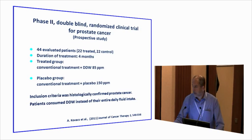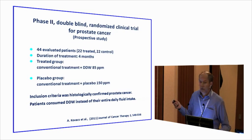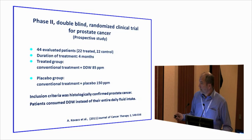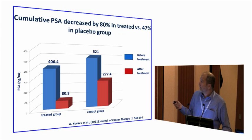Going to the human clinical trials: we were lucky to complete one phase two clinical trial, which was a randomized, double-blind study. We evaluated 44 patients over four months. The treated group consumed water with 85 ppm; the placebo group consumed 150 ppm. Inclusion criteria required histologically confirmed prostate cancer. At the end of the study, PSA dropped by 80% in the treated arm, versus only 47% in the placebo group.